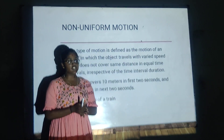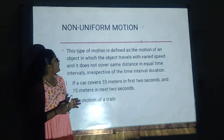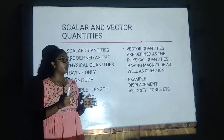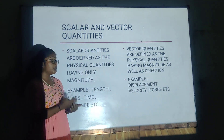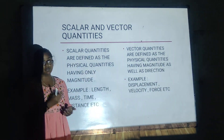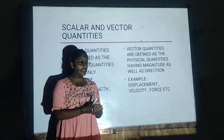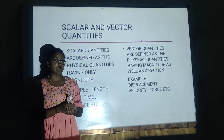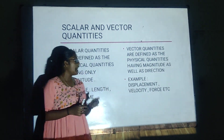Now let us differentiate between scalar quantities and vector quantities. Scalar quantities are physical quantities which have only magnitude — for example, length, mass, time, distance, and speed. Vector quantities are defined as physical quantities which have magnitude as well as direction — for example, displacement, velocity, and force.